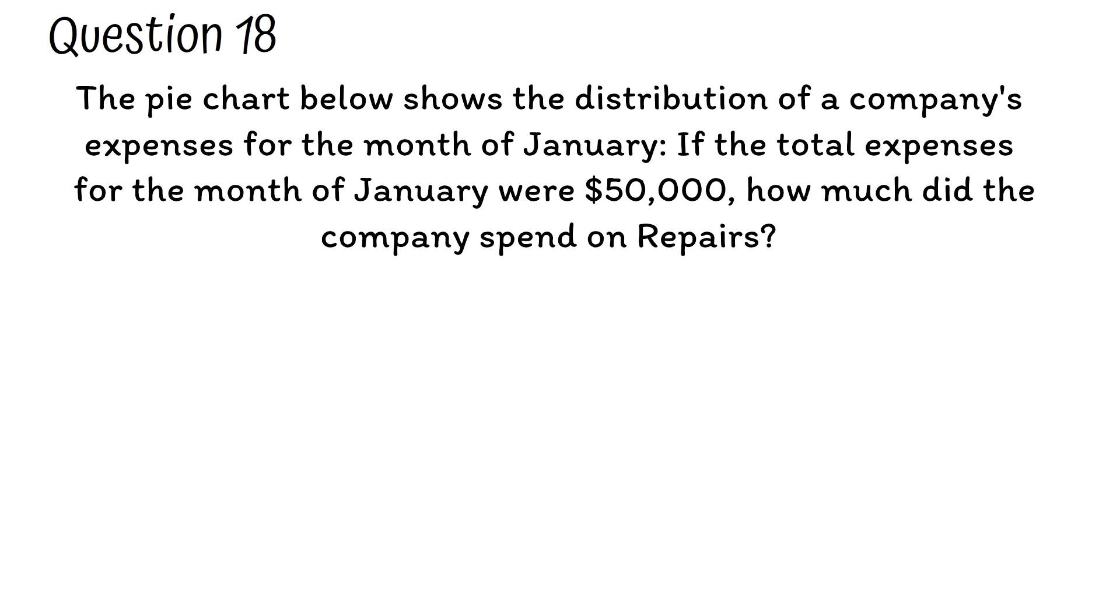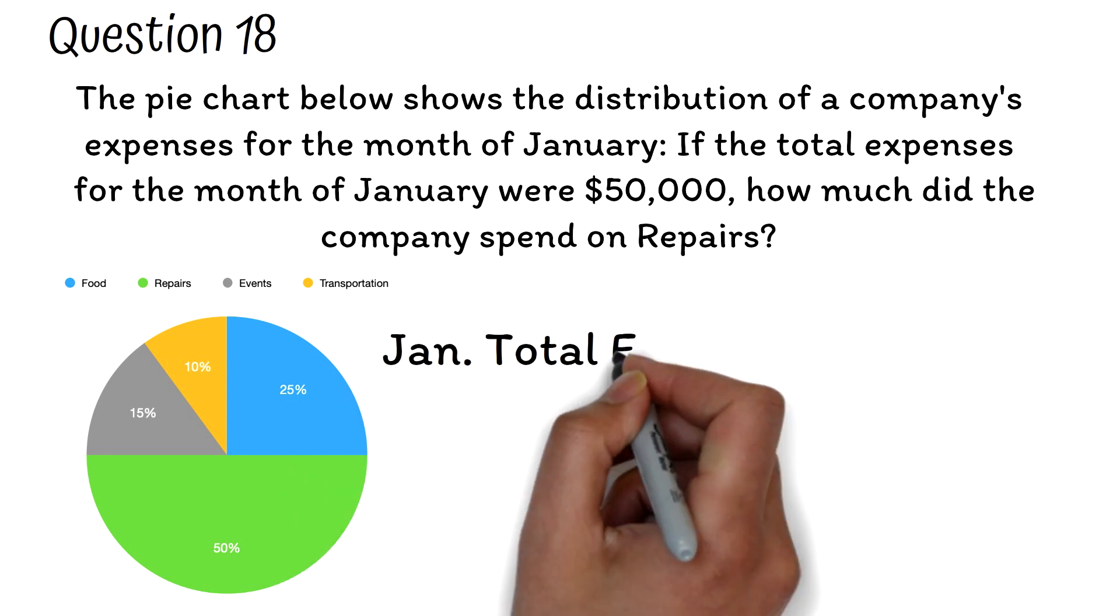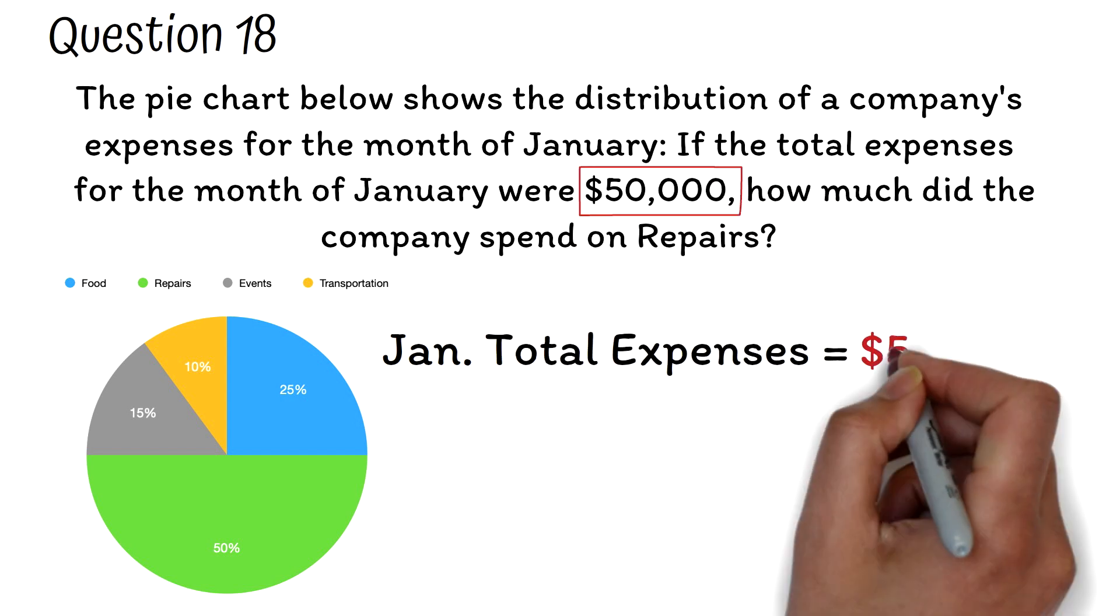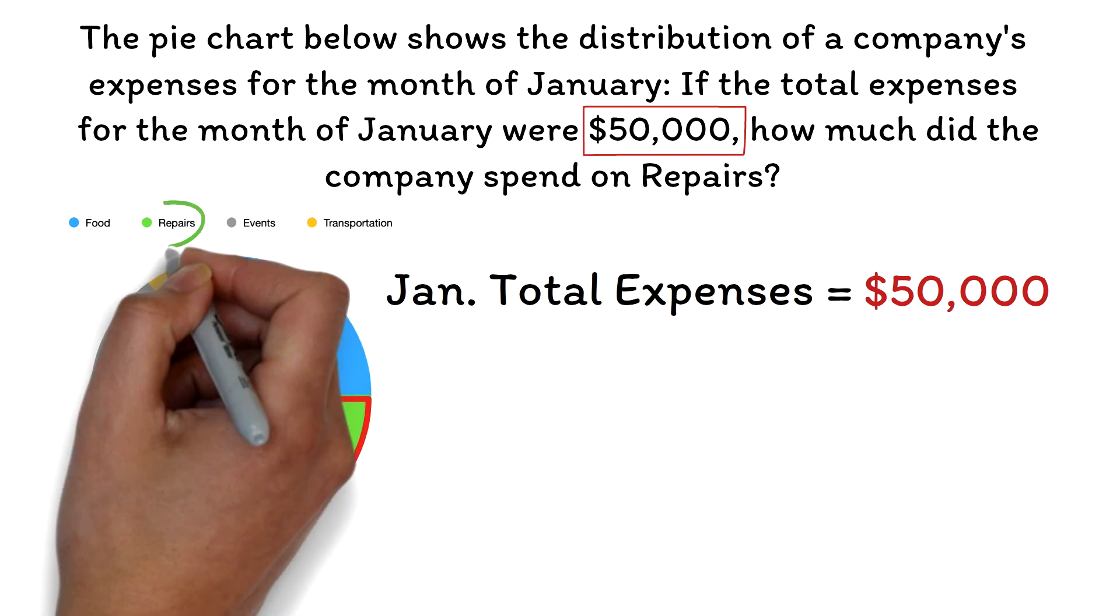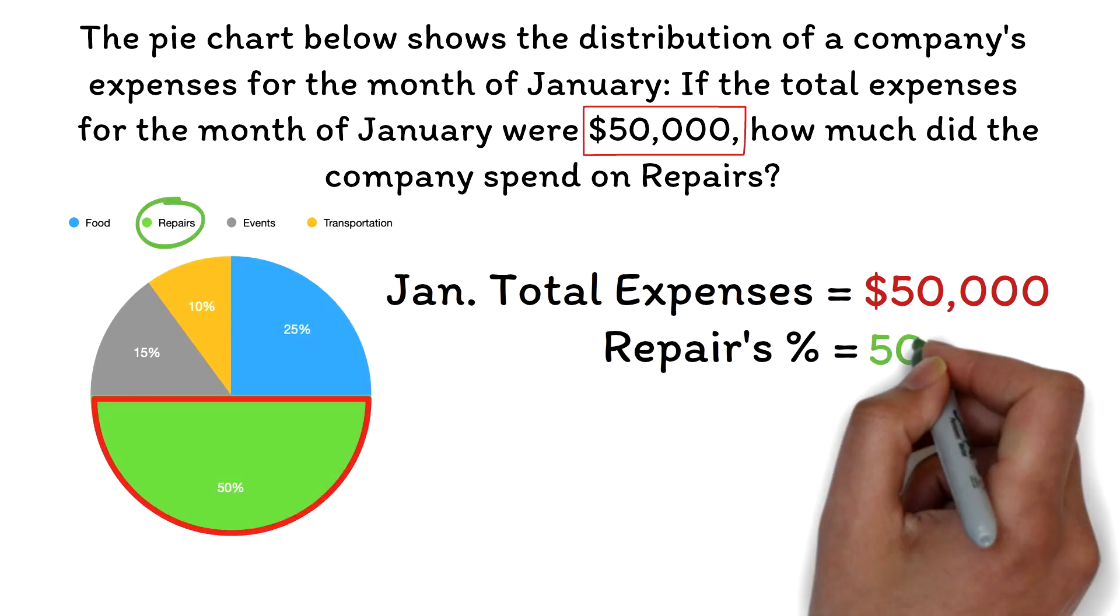Question 18. The pie chart below shows the distribution of a company's expenses for the month of January. If the total expenses for the month of January were $50,000, how much did the company spend on repairs? With the information given, the total expenditure of the company in January is $50,000. From the pie chart, we are also given that 50% of the total expenditure was on repairs.